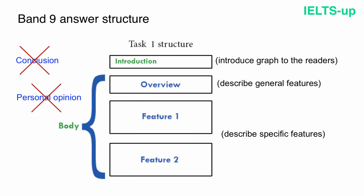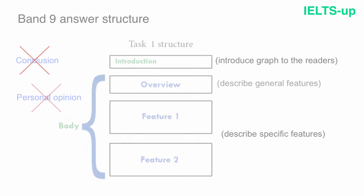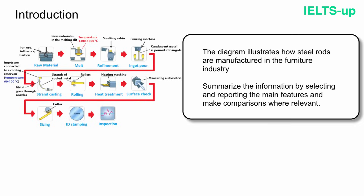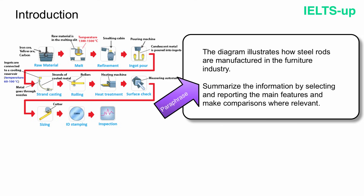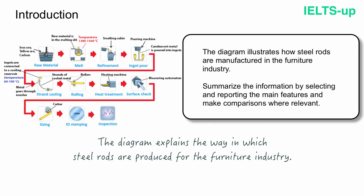Well, enough generalities — let's start writing our band 9 answer. The first paragraph you need to write is your introduction. For the introduction, you need to paraphrase the topic in your own words. So instead of writing 'the diagram illustrates how steel rods are manufactured in the furniture industry,' you need to write a paraphrased version of that sentence. Here is how I wrote it: 'The diagram explains the way in which steel rods are produced for the furniture industry.'